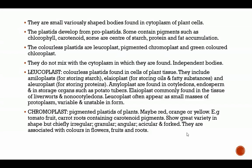Leucoplasts are colorless plastids found in cells of plant tissue. They include amyloplasts for storing starch, elaioplasts for storing oils and fatty substances, and aleuroplasts for storing proteins. Amyloplasts are found in cotyledons, endosperm, and in storage organs such as potato tubers. Elaioplasts are commonly found in the tissue of liverworts and monocotyledons. Leucoplasts often appear as small masses of protoplasm, variable and unstable in form.